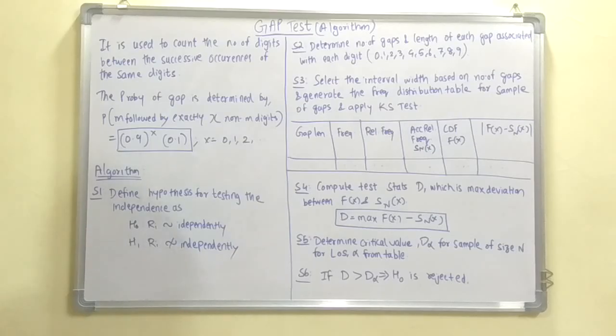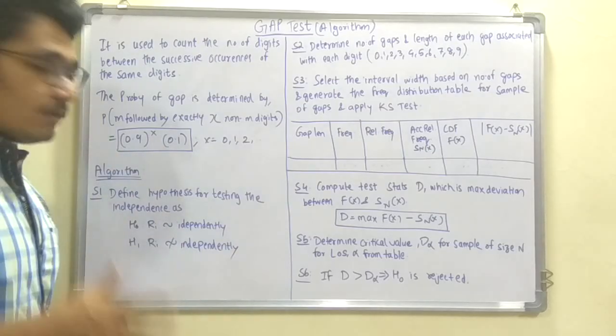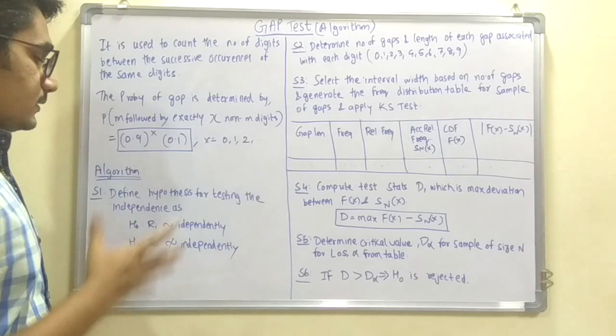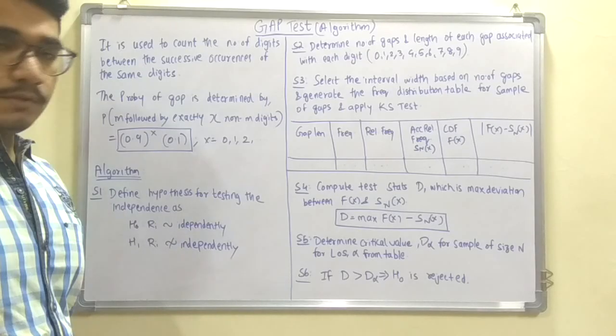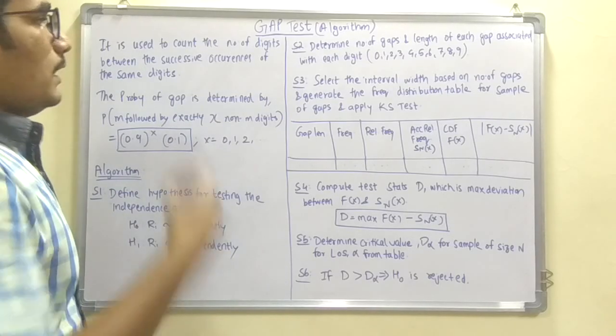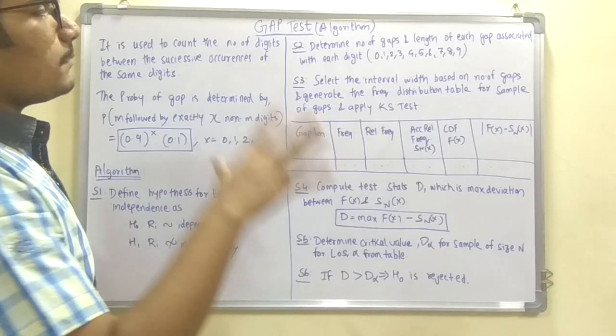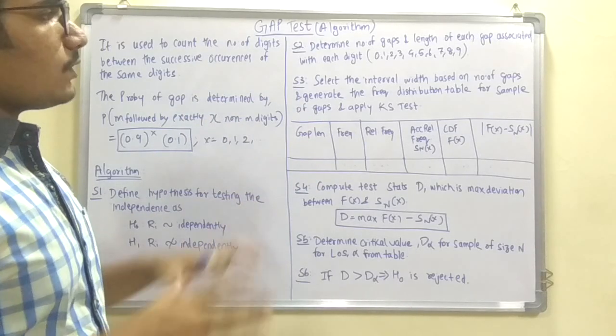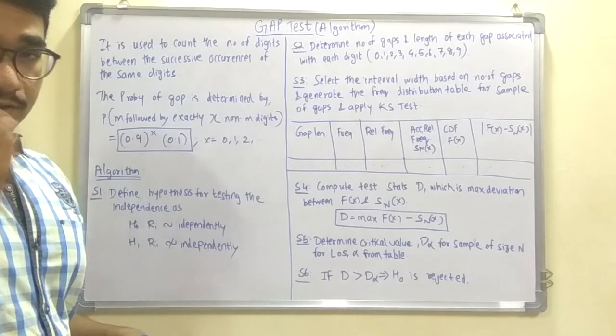We define the hypothesis for testing independence as H0: Ri is independently distributed versus H1: Ri is non-independently distributed.